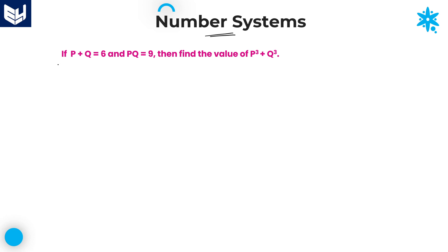See the first question which is given in this session. If p plus q is equal to 6, pq is equal to 9, then find the value of p cube plus q cube. To solve this problem, we must know the formula of p cube plus q cube. Without knowing this formula, it is not possible to solve the answer.